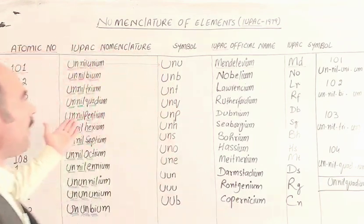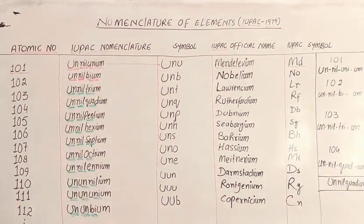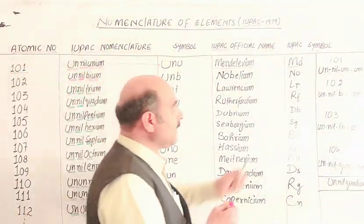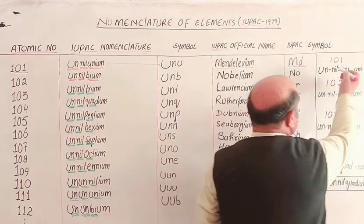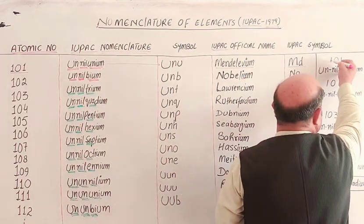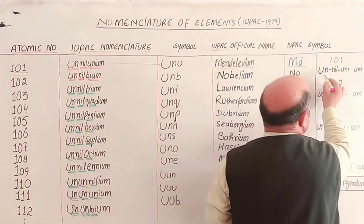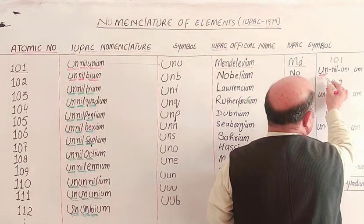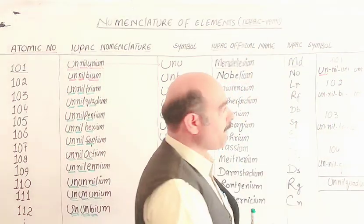As you can see, take atomic number 101. Follow 101 directly. The word for 1 is 'un', for 0 is 'nil', and for 1 again is 'un'. Un means one — for example, as in 'unicellular organism', meaning single-celled.